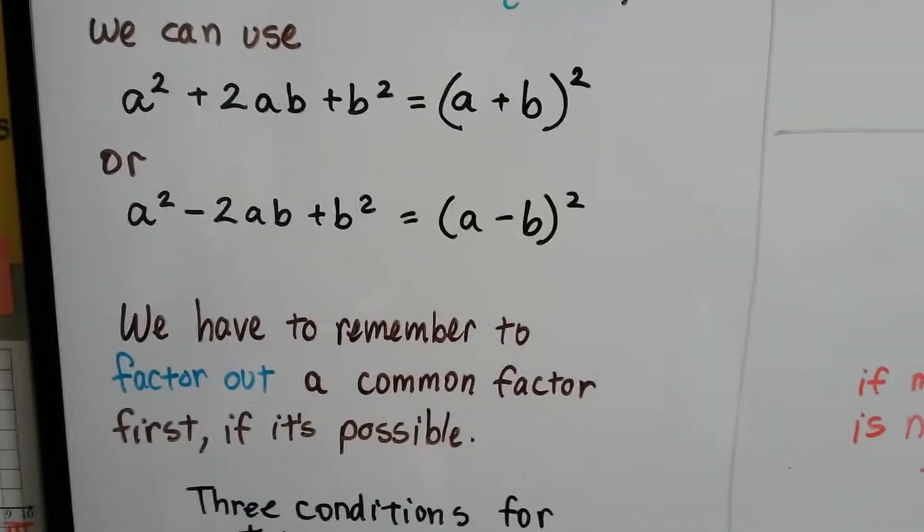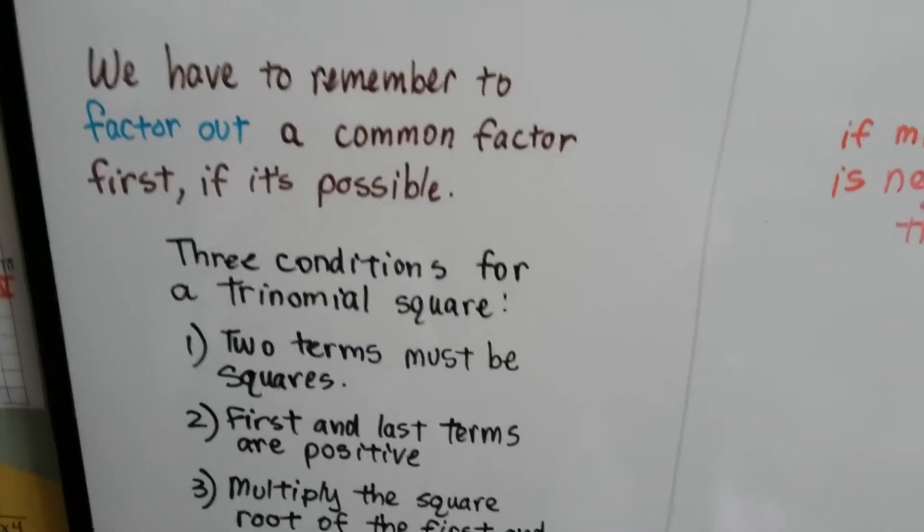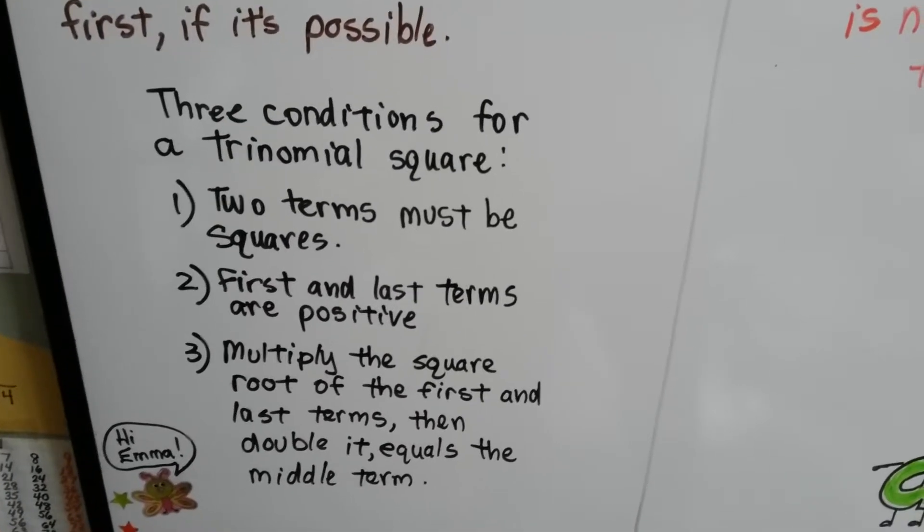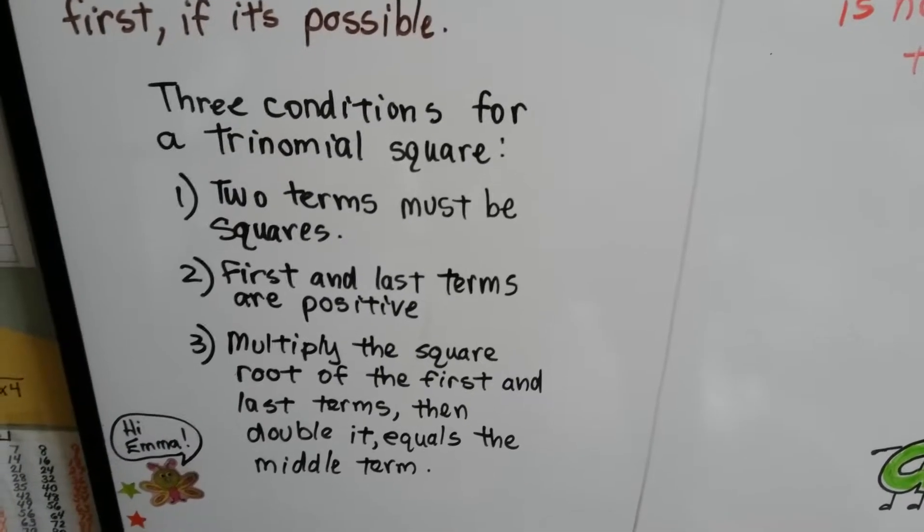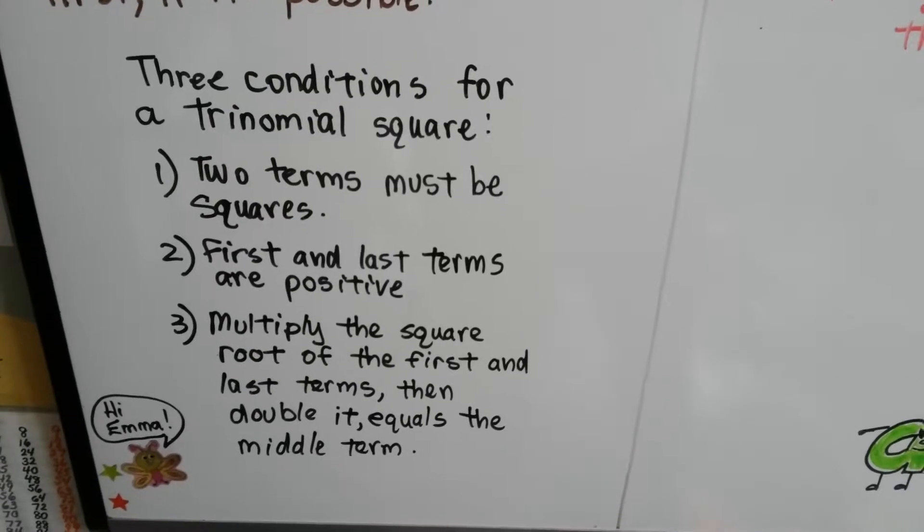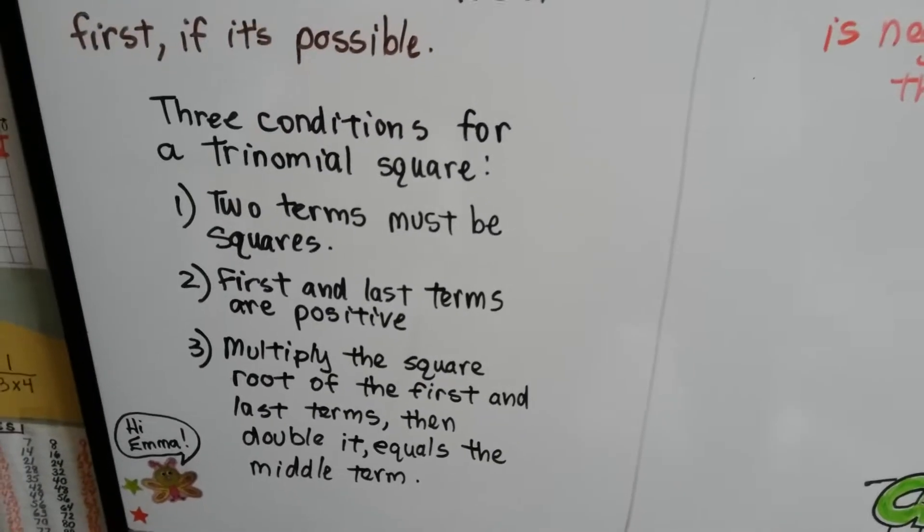We have to remember to factor out a common factor first if it's possible. And we have to remember the three conditions for a trinomial square: Two terms must be squares. The first and last terms are positive. And if we multiply the square root of the first and last terms and double it, it's going to equal the middle term.